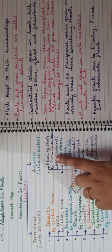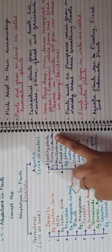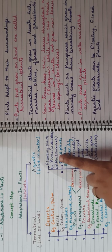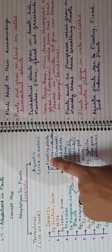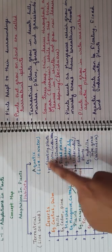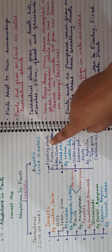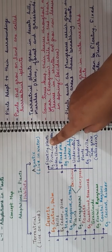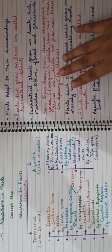Floating plants — examples are pistia, which is also known as water lettuce, and wolffia, which is also known as duckweed. Floating plants float on water. They have roots but those roots are almost non-functional because they float on water.